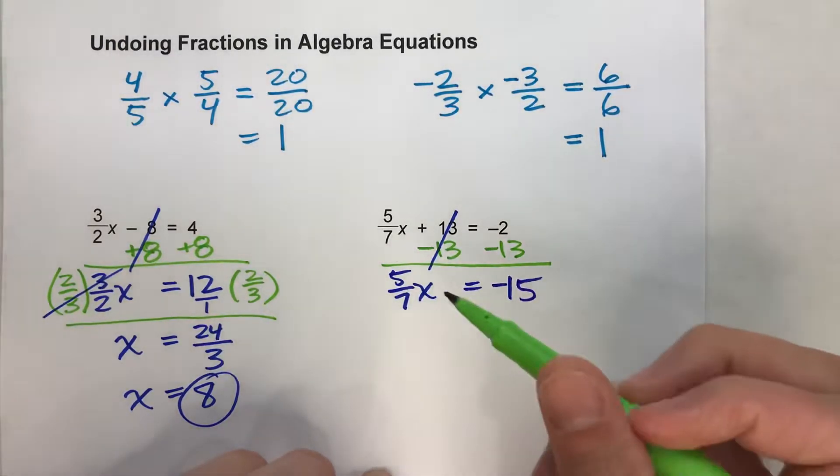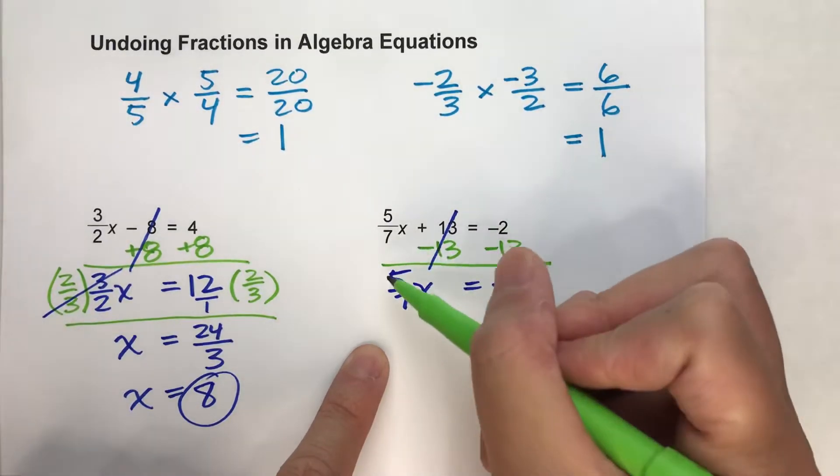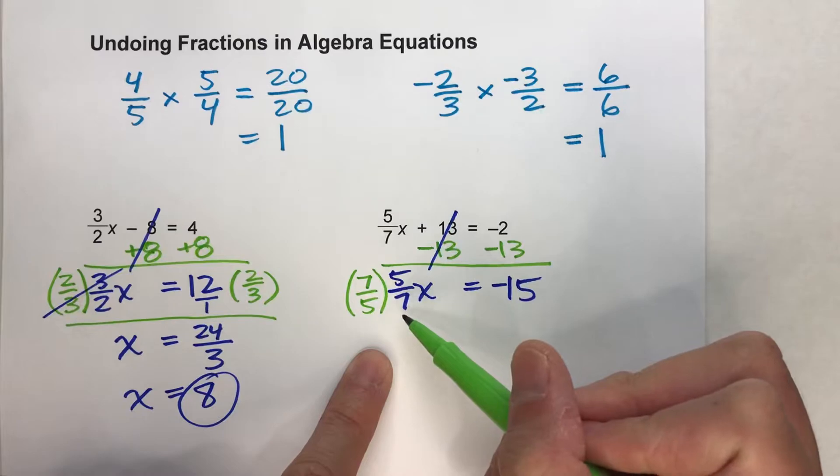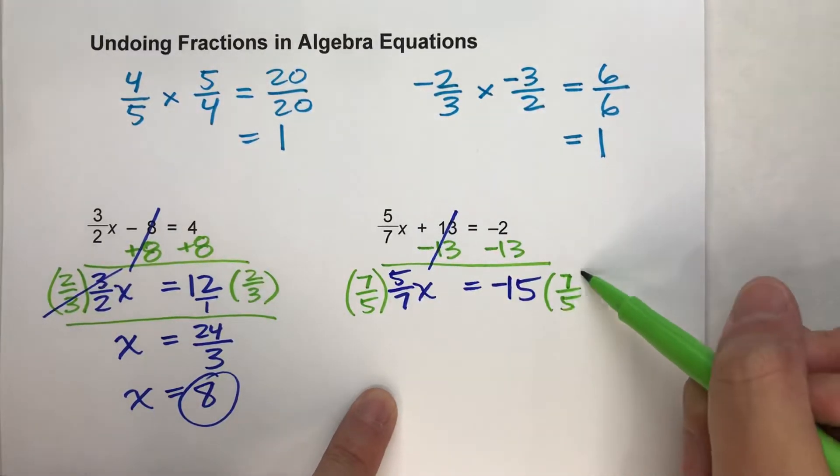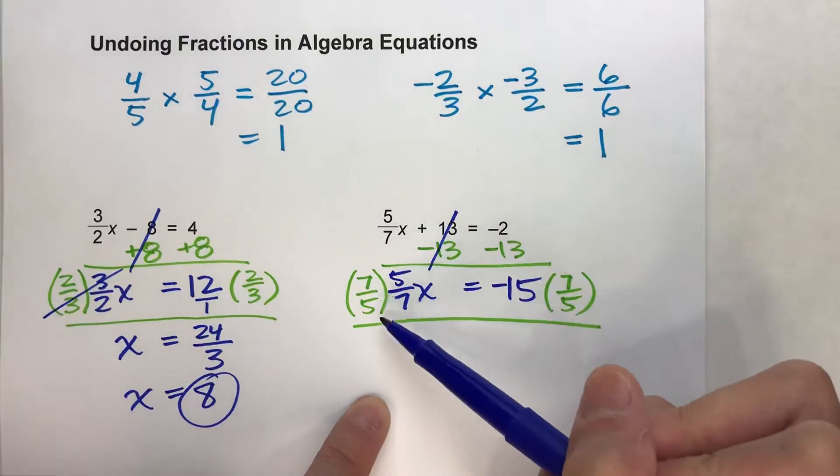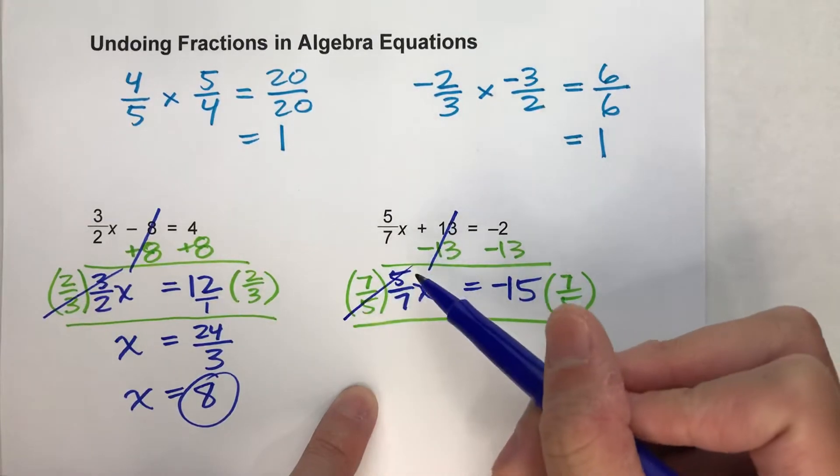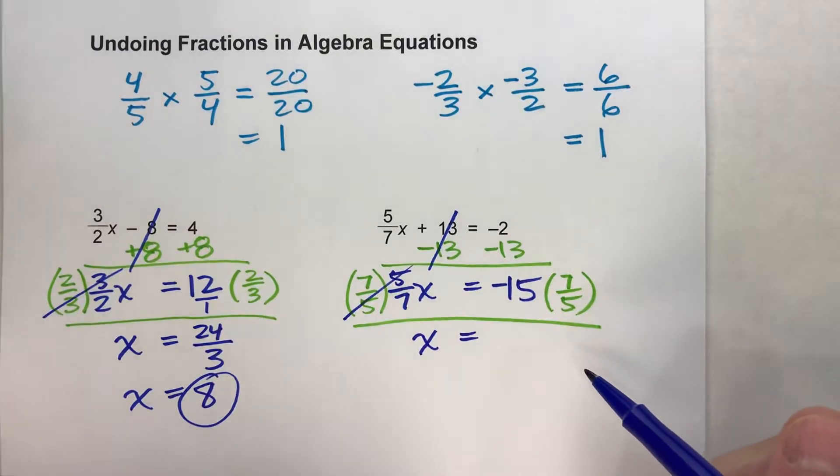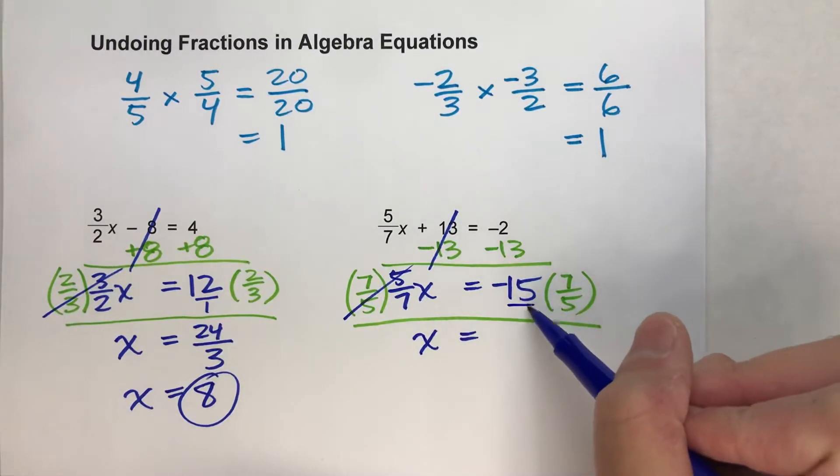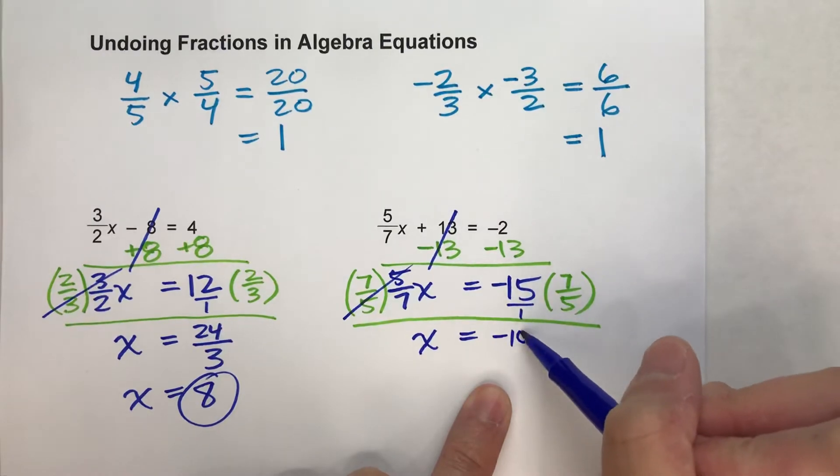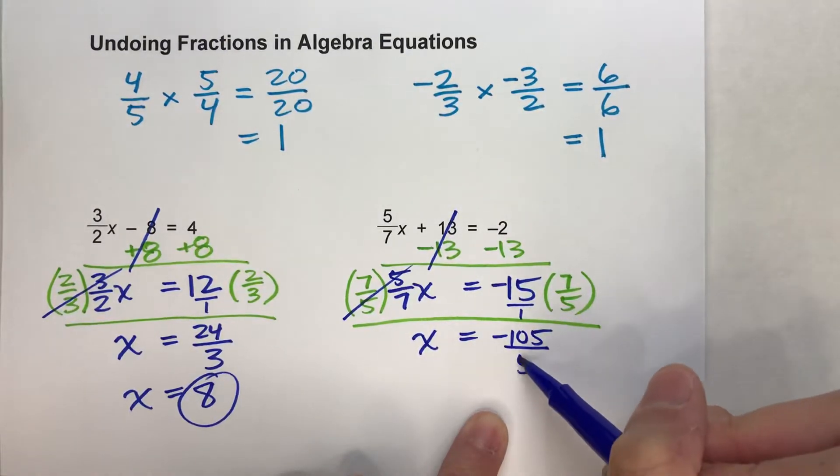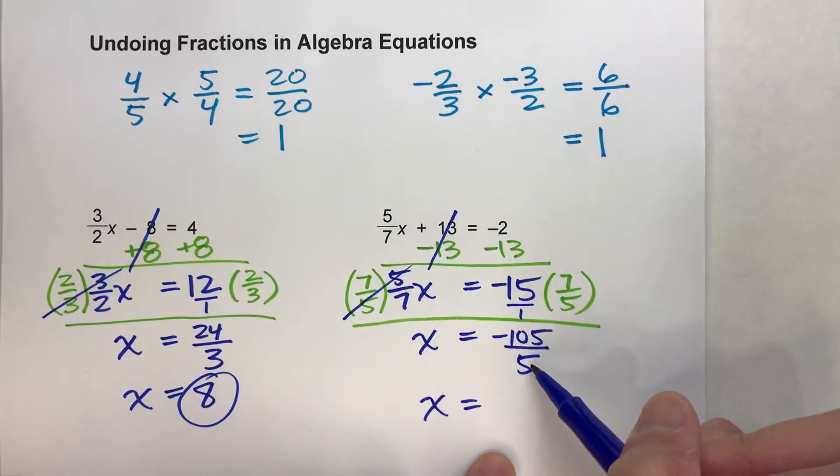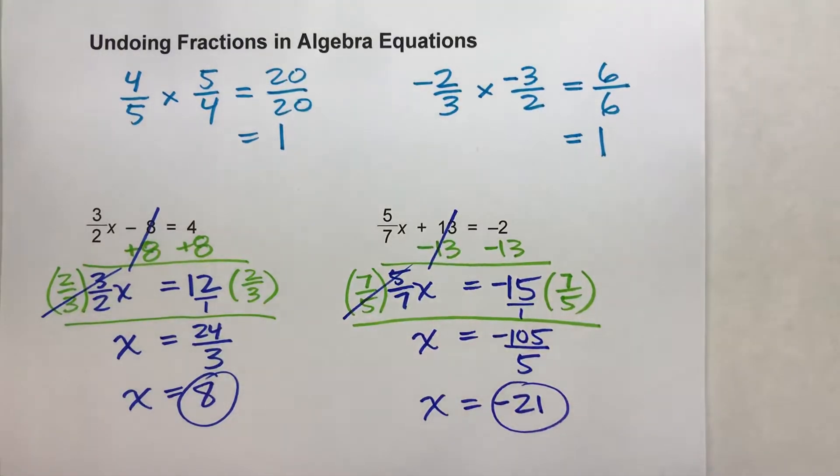Now here's the new step. To undo 5 sevenths, we're going to multiply by the reciprocal. So instead of 5 over 7, we're going to multiply by 7 over 5. But what I do to one side of the equal sign, I have to do to the other side. And what happens? 7 fifths times 5 sevenths makes 1 whole. So this undoes each other to make 1 whole x. The equals drops down. Now on the other side, negative 15 times 7 fifths, let's put this over 1. Negative 15 times 7 is negative 105, over 1 times 5 is 5. And this can be simplified, because negative 105 divided by 5 is negative 21. And there's your answer.